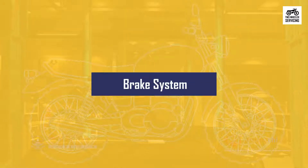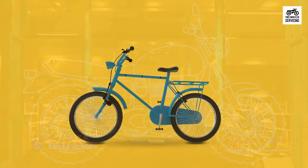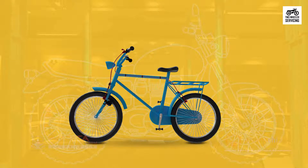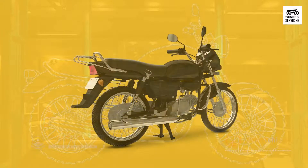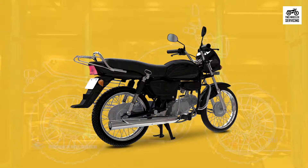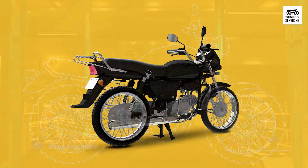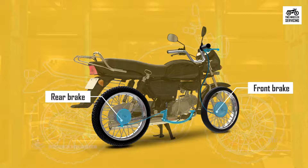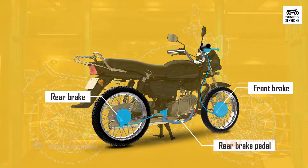Now let's look at the brake system. In the case of a bicycle, brakes are often just rubber pads that are pressed on the outside of the wheel by a handlebar lever to create friction and slow the bicycle down. The brake of a motorcycle also has the same parts. Just like the bicycle, a motorcycle has rear and front brakes. These are controlled by a brake pedal for the rear wheel and a brake lever for the front.